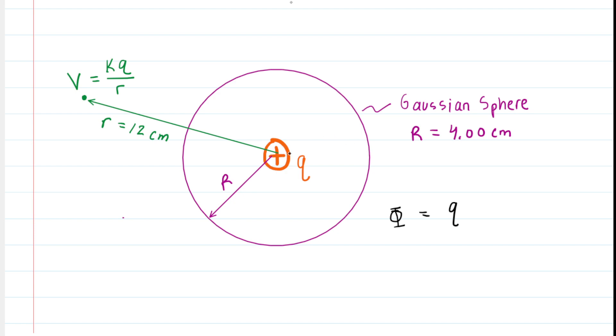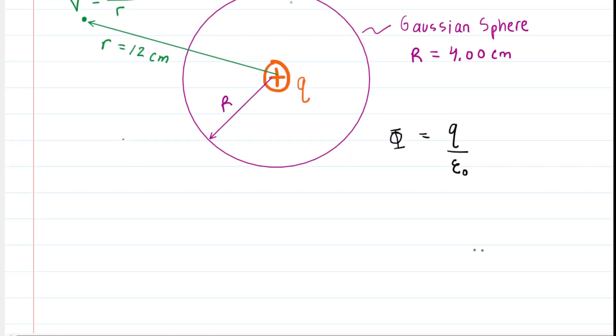So if we multiply both sides of this equation by that fundamental constant, then we would have the constant times the electric flux through the Gaussian surface equals q. That would give us the amount of charge on that ball.